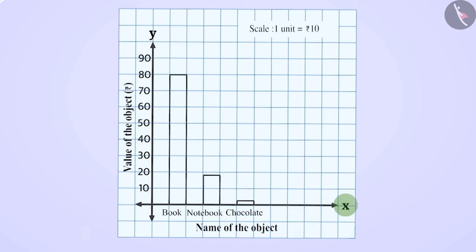Here, the name of the objects is shown on the horizontal axis and the numerals on the vertical axis which represent the value of the object. Here, the scale is 1 unit equals Rs. 10. This means that 1 unit of length is for Rs. 10.